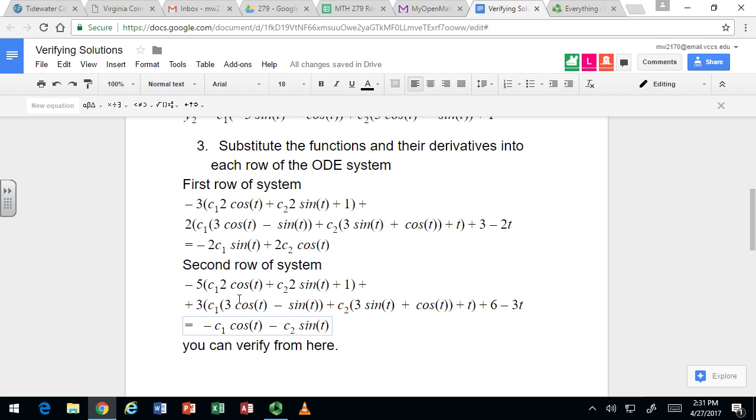Now what about the constants? We've got negative 5 times 1 is negative 5 plus 6, so that's actually just a plus 1. And then there is a 3t here that will add up with that negative 3t, so those will go away.